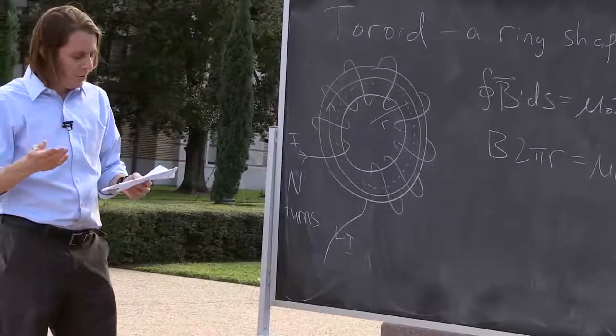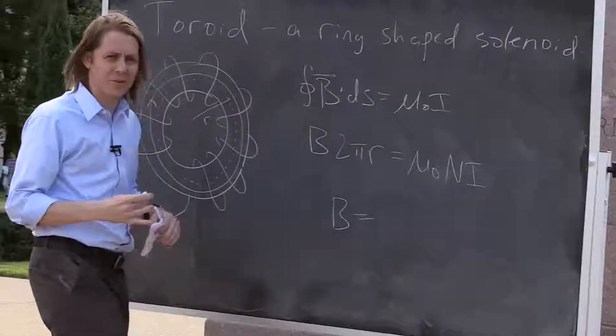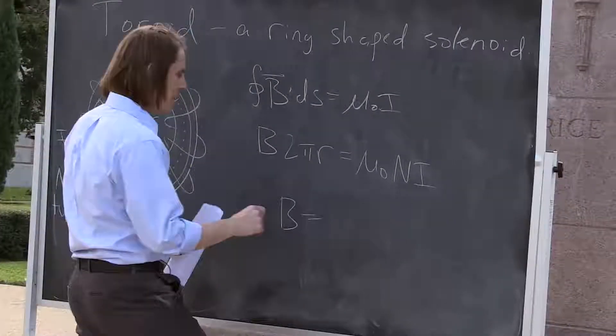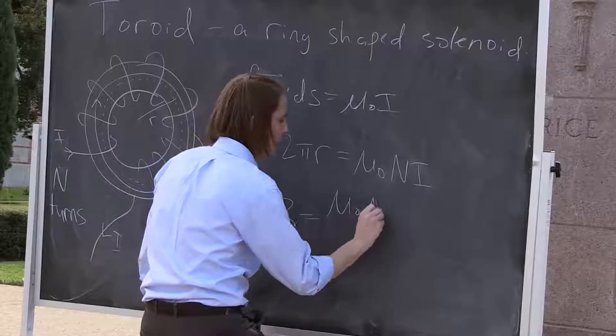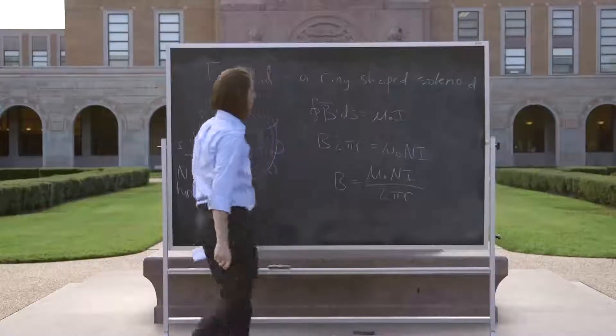So all we've got to do is solve that then. So B, I probably could even solve this without my notes. I think I could, but I'll look anyway. It is μ₀NI over 2πr.